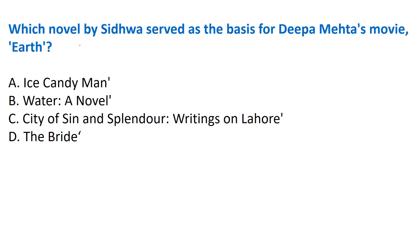Next question: 'Which novel by Bapsi Sidhwa served as the basis for Deepa Mehta's movie Earth?' Options: A) Ice Candy Man, B) Water: A Novel, C) City of Sin and Splendor - Writing on Lahore, D) The Bride. The correct answer is Option A - Ice Candy Man is the novel by Sidhwa that served as the basis for Deepa Mehta's movie Earth. The movie was inspired by and based on this novel.